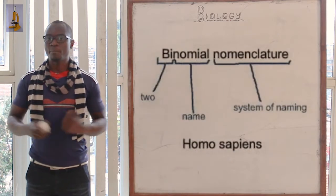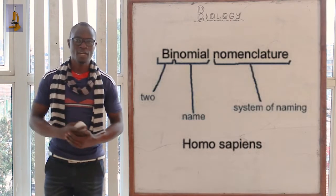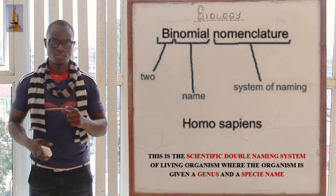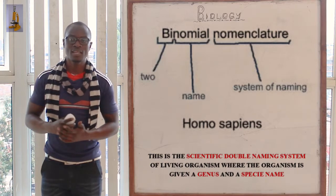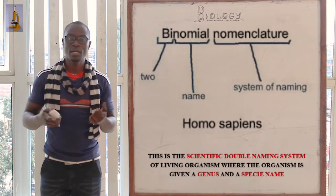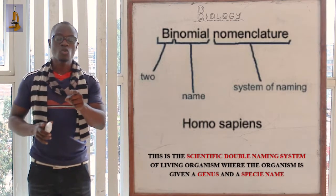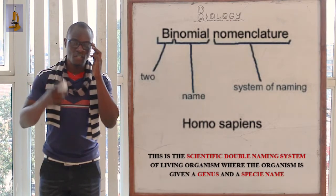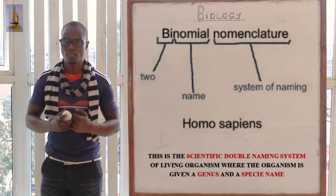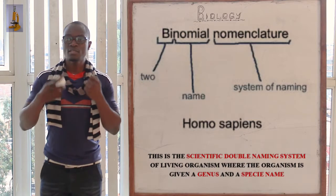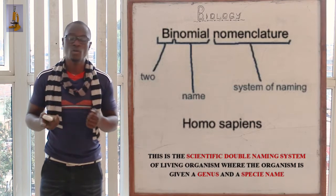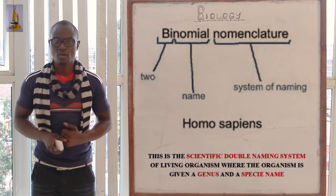Now let's look at binomial nomenclature. What is binomial nomenclature? This is the scientific double naming system of living organisms. You must always say it is the scientific double naming system — it must be scientific. An organism is given a genus name and a species name. That is the complete definition.